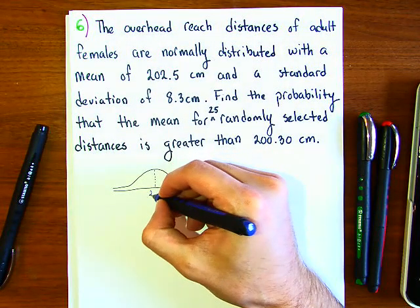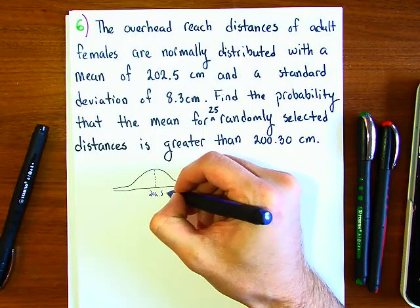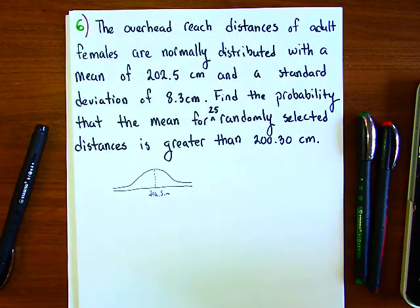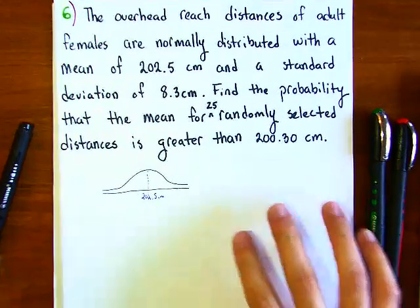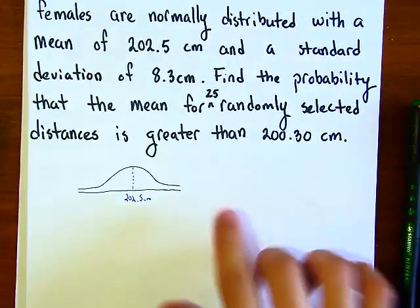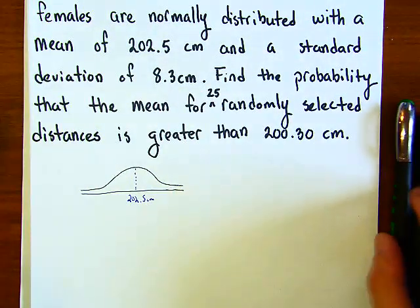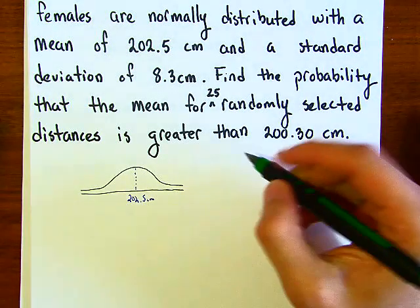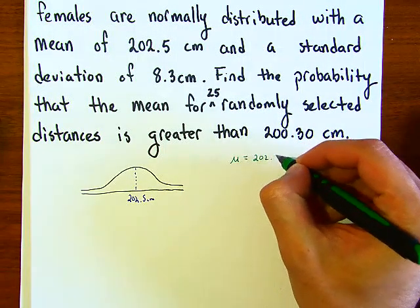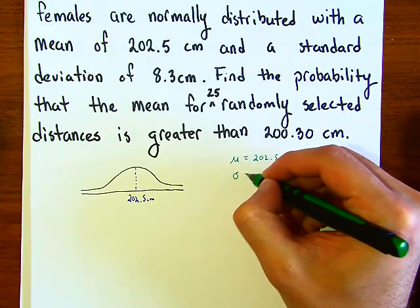And what's the next part? It says a standard deviation of 8.3 centimeters. Okay, so let's write our symbols. We know that μ will be 202.5 and σ will be 8.3 centimeters.